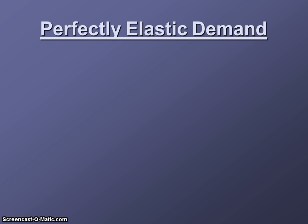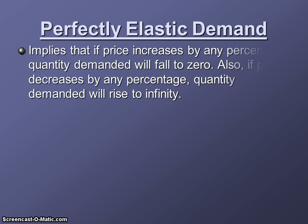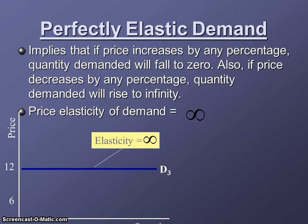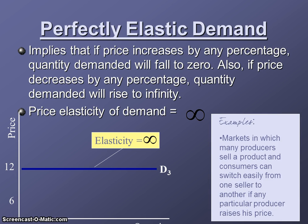At the other end of the spectrum, perfectly elastic demand implies that if price increases by any percentage, quantity demanded falls to 0, and if price decreases, quantity demanded rises to infinity. The demand curve would be a completely horizontal line. A practical illustration: imagine four gumball machines all selling gumballs for a quarter, and one raises its price to 26 cents — quantity demanded at that machine falls to 0 because everyone buys from the others instead.